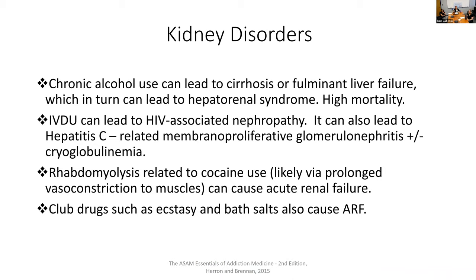For kidney disorders, chronic alcohol use and cirrhosis can lead to liver failure, which can then turn into hepatorenal syndrome — where the kidneys fail — and this has very high mortality. Injection drug use can lead to HIV-associated nephropathies and hepatitis C, which can cause a particular glomerulonephritis. Rhabdomyolysis, often related to cocaine use or prolonged immobility from alcohol, can cause prolonged vasoconstriction of blood flow to muscles and in turn cause renal failure. We also see acute renal failure related to certain club drugs such as bath salts.